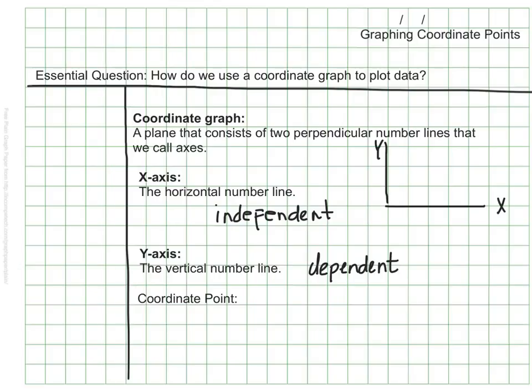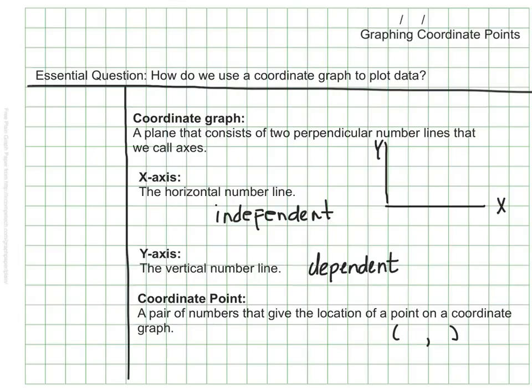We plot our points using a coordinate point, also sometimes called a coordinate pair. A coordinate pair or coordinate point is a pair of numbers that give the location of a point on a coordinate graph. It's written in a very specific way. It uses parentheses and a comma. It's also important to know that the x value always comes first, and the y value comes second, just like x comes before y in the alphabet.